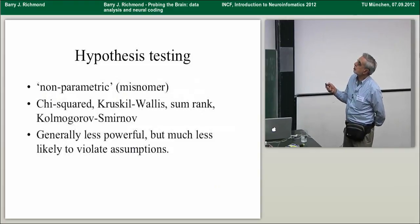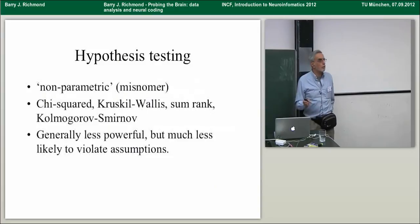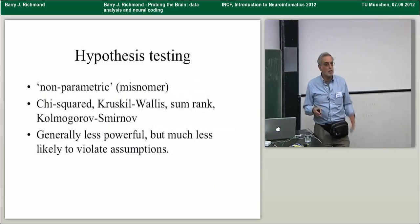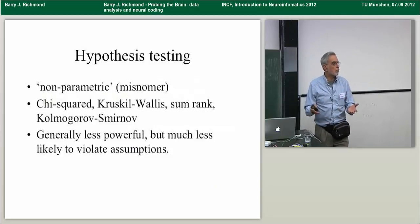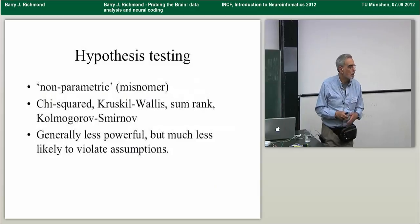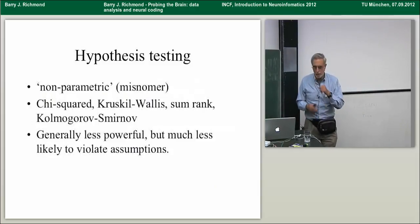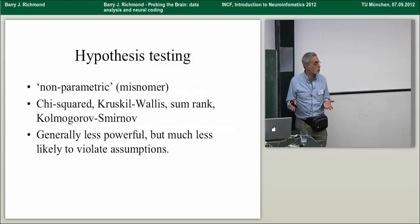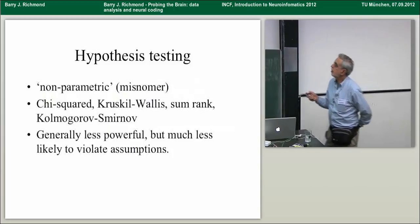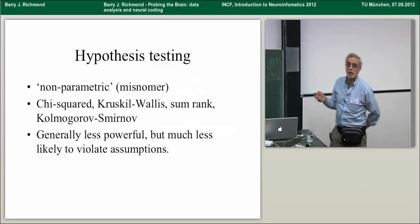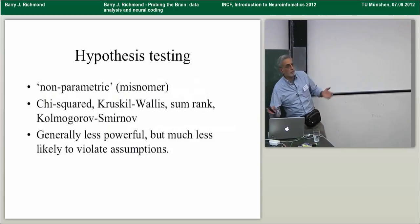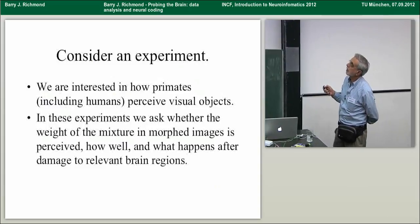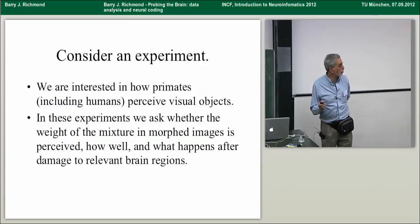You can also do nonparametric statistics, which is a misnomer — it's just that the parameter you're measuring is different. You're always testing against some distribution. In nonparametric statistics, instead of testing data against a normal distribution, you're often testing the ranks against a normal distribution, because there are theorems showing that for most real-world data, the ranks are Gaussian distributed. These methods are generally less powerful but much less likely to violate assumptions, so if you get a significant result, you usually have something reasonable to believe. Be sure you know where it came from before talking about it too much.